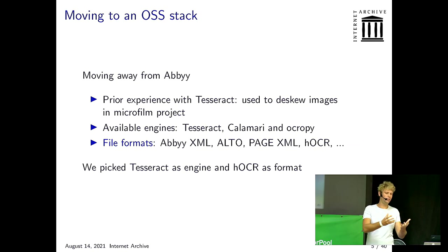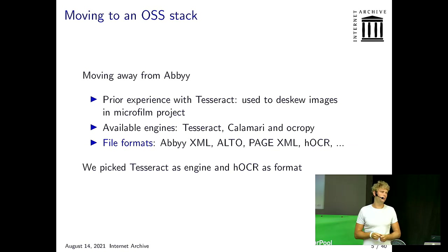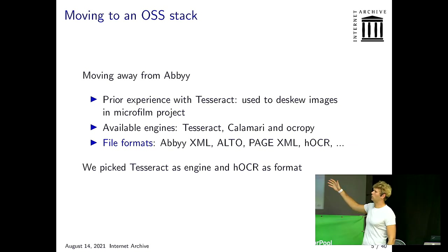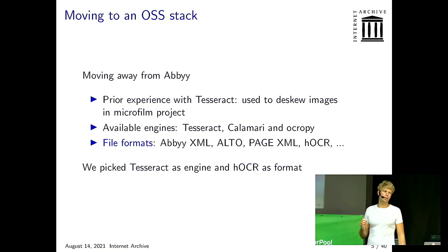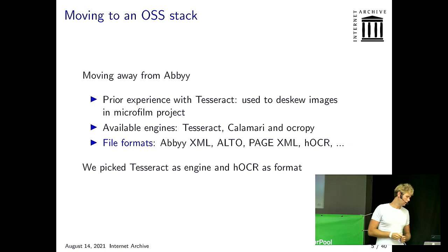If a computer does OCR, it can just give you the text as characters, but that doesn't tell you what text is where or what the structure is. There are various structured formats for representing OCR results: ABBYY XML from FineReader, Alto, Page XML, HOCR, and more. We ended up using Tesseract as an engine and HOCR as a format. After evaluating quality versus ABBYY, Tesseract was actually performing really well, and HOCR was a maintained, well-defined but simple format, still powerful enough for what we wanted.